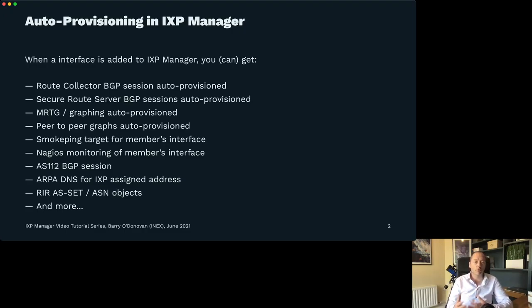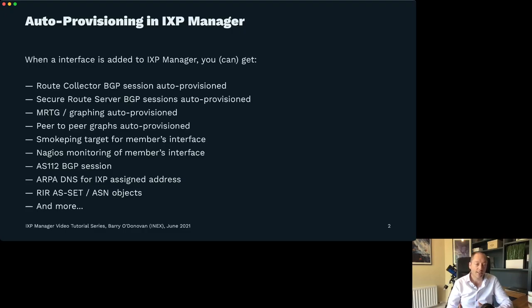Some of these things are, for example, a route collector, the route servers we're going to look at here, all of the graphing in the peer-to-peer graphs, smoke ping for measuring latency, NAGIOS monitoring, AS112 BGP sessions, reverse DNS, the RIR data, ASSET and ASN objects, and a lot more. At INEX, we auto-provision our switches from IXP Manager.